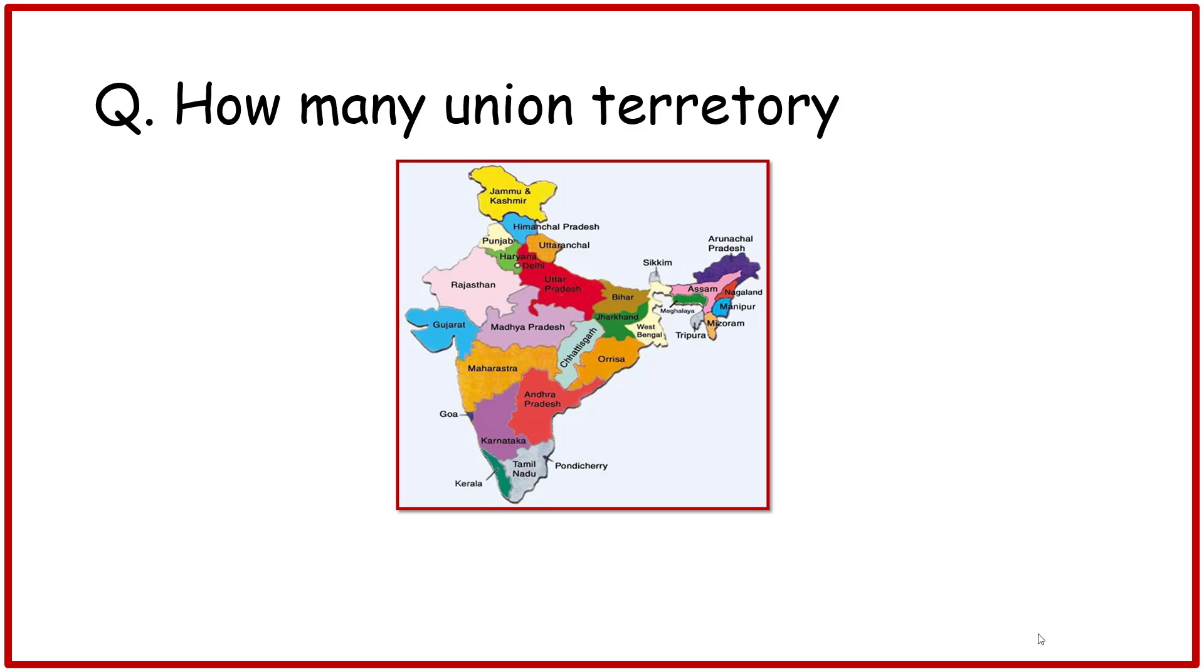Question. How many union territories in our country? A 8, B 9, C 10.